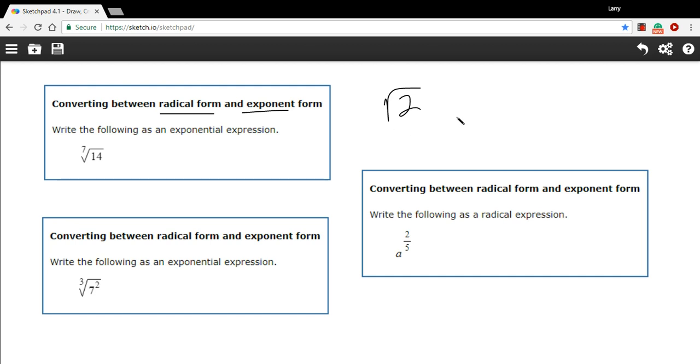If we wanted to rewrite this in exponent form, we'd write that as a 2 with some exponent here. Well, what's the exponent of a square root? It is one-half, so the square root of 2 is the same as 2 to the one-half power.